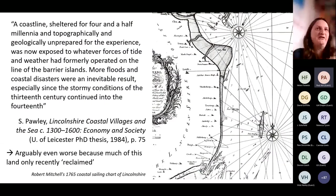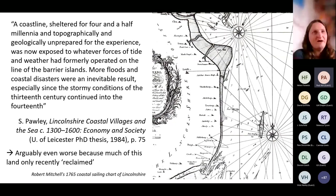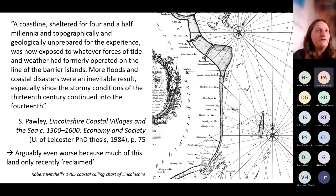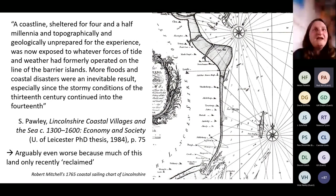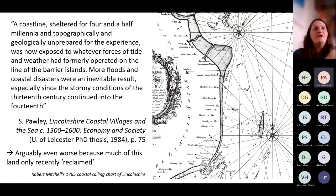Simon Paulie puts it quite nicely: 'a coastline sheltered for four and a half millennia and topographically and geologically unprepared for the experience was now exposed to whatever force of tide and weather formerly operated on the line of barrier islands. Floods and coastal disasters were the inevitable results, especially in what's been termed the stormy centuries of the 13th and 14th centuries.' These most coastal settlements from Mablethorpe down to Skegness were founded on dried-out salt marsh, and this eroded relatively rapidly once it was exposed to the sea.